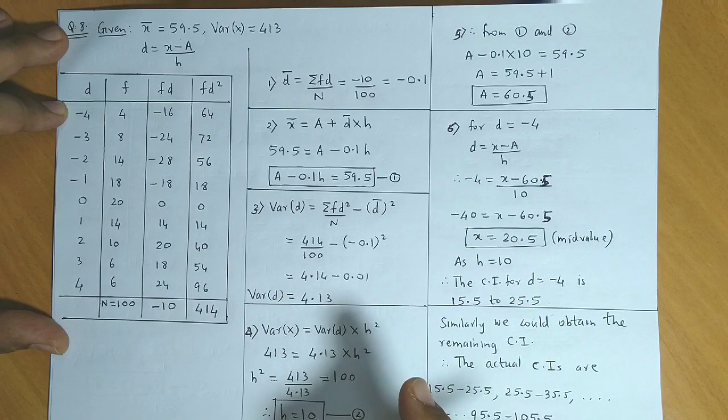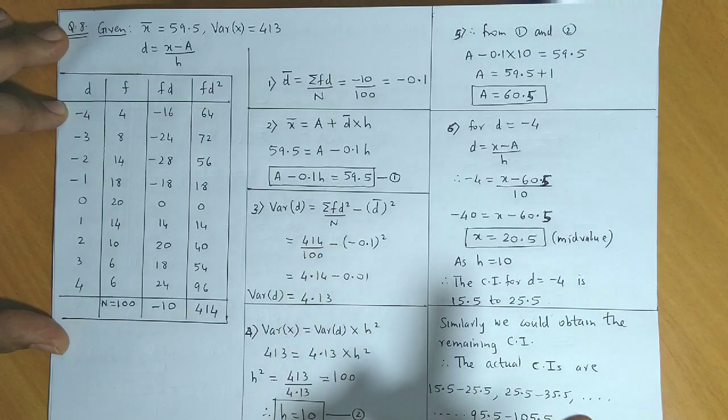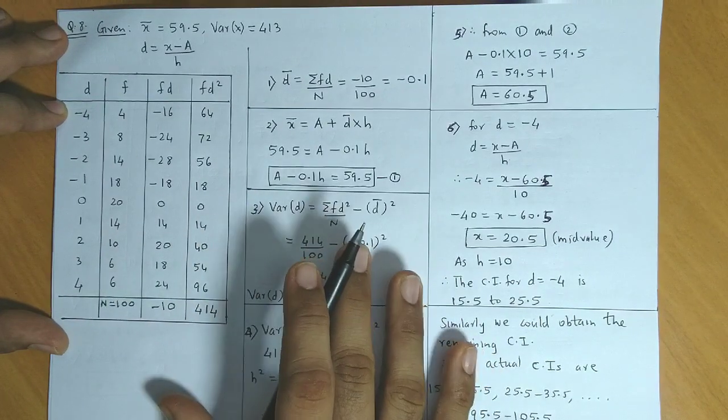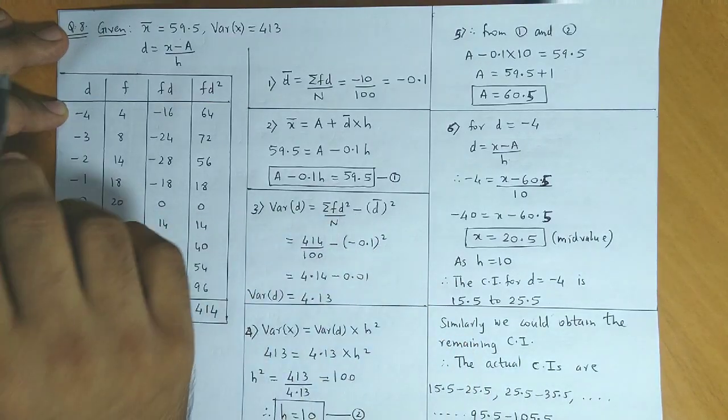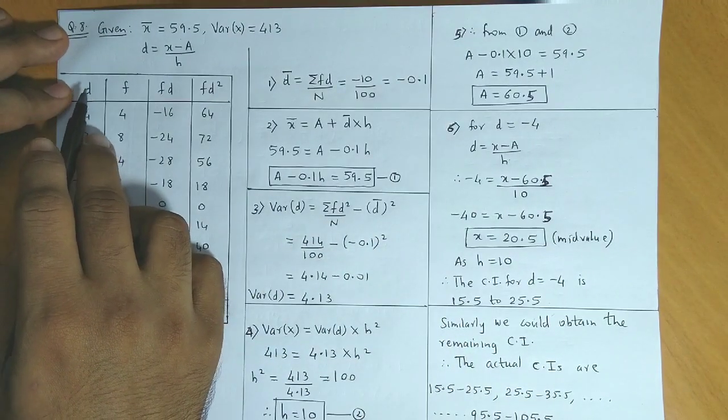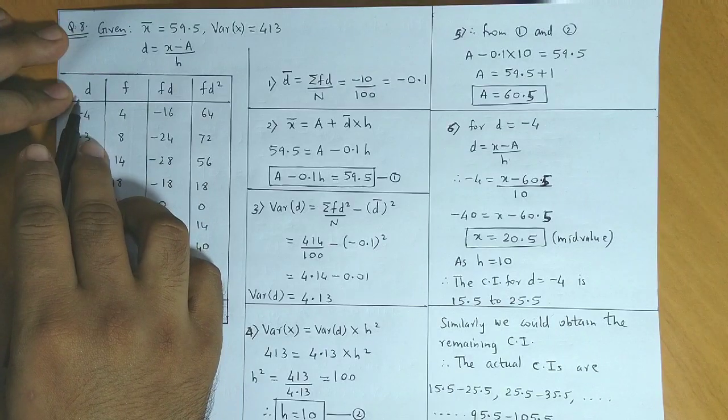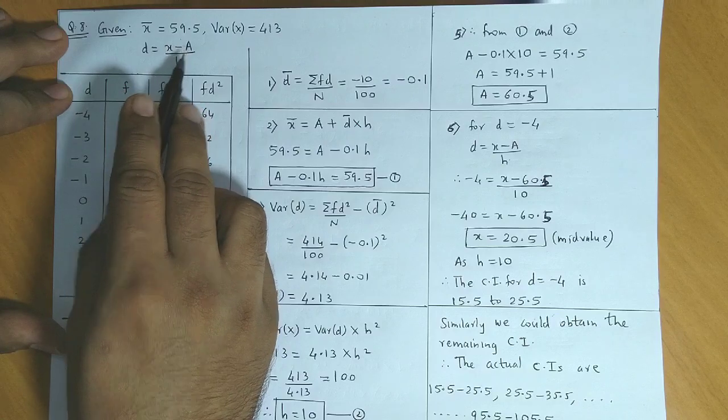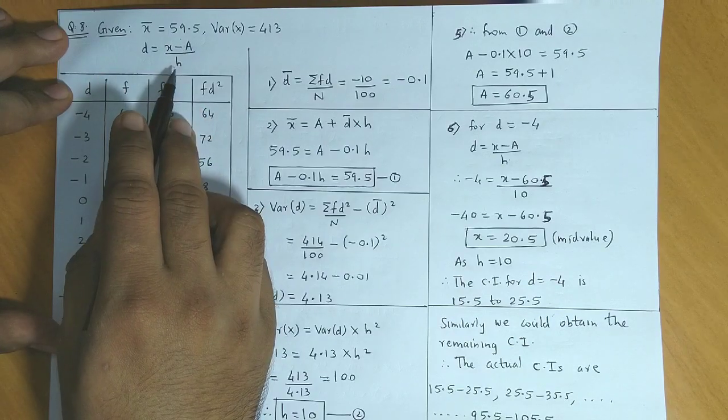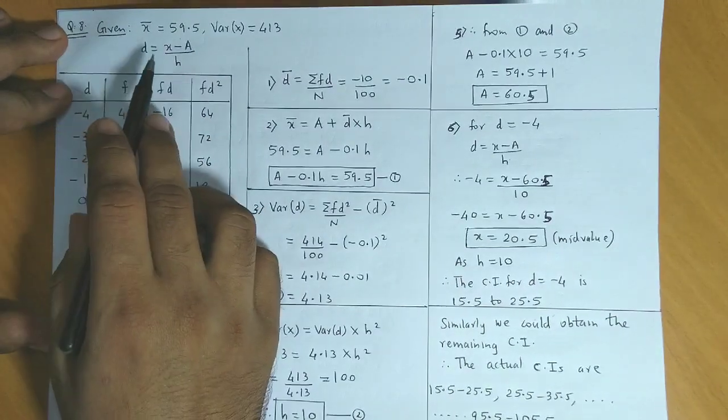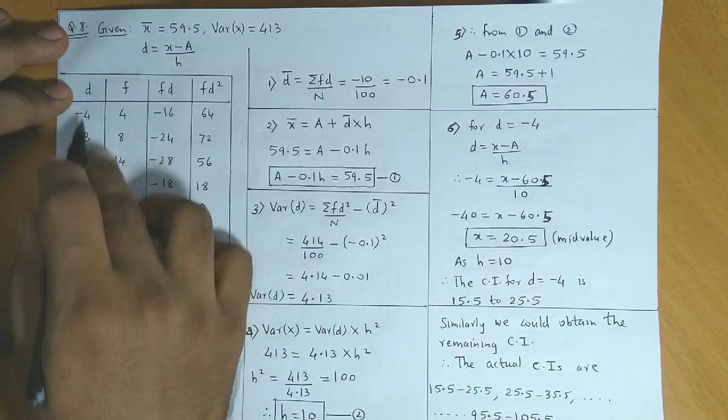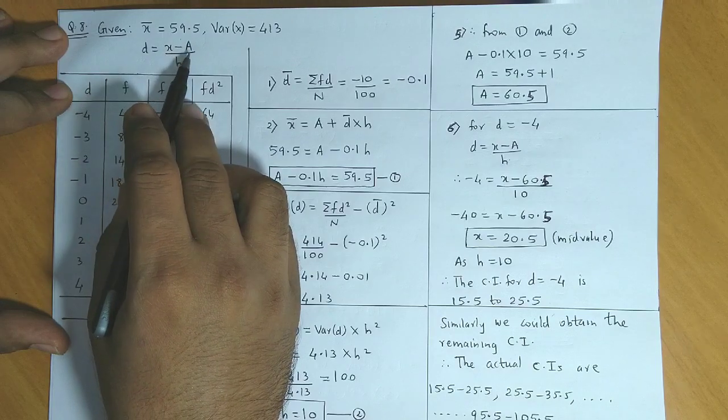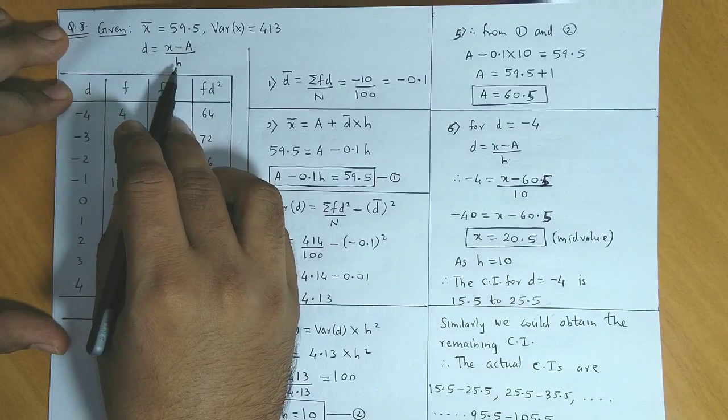In the previous sum, question number 7, we used step deviation method and converted x to u. This question is similar, but here they've already used d, where d is x minus a upon h. So variable x is already converted to d, where a is the assumed mean and h is the height.